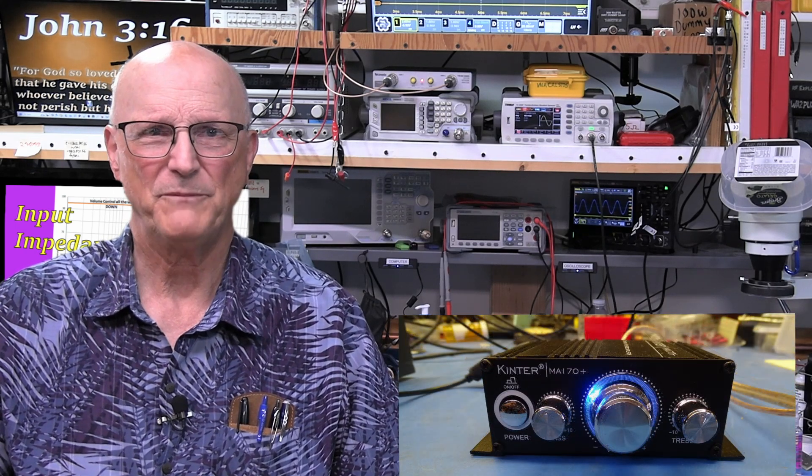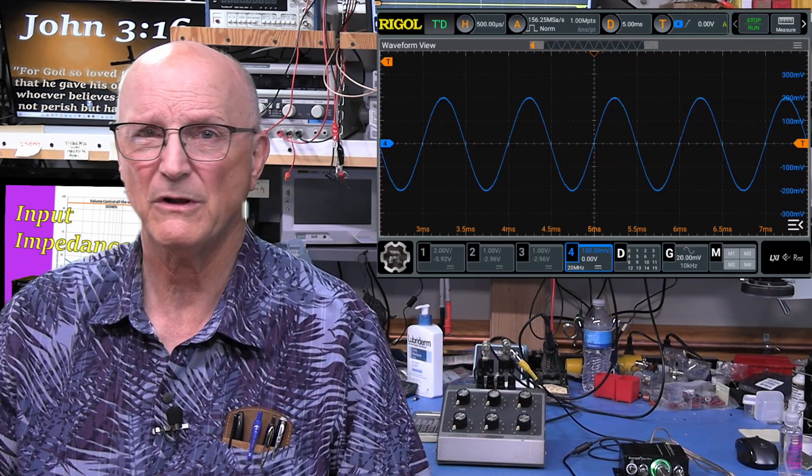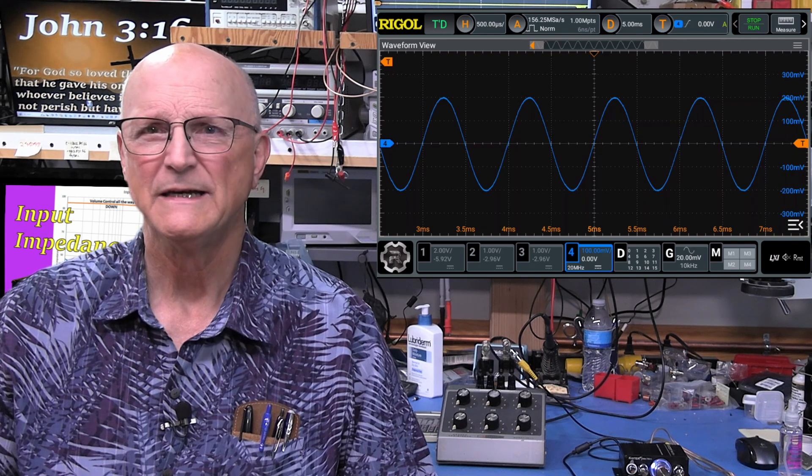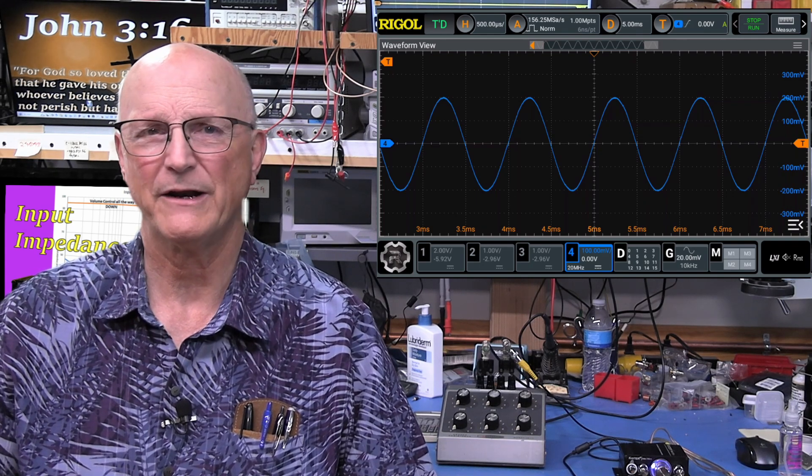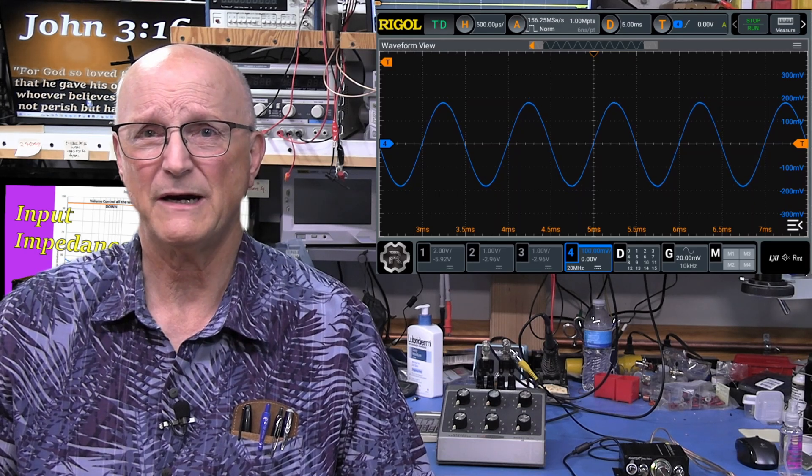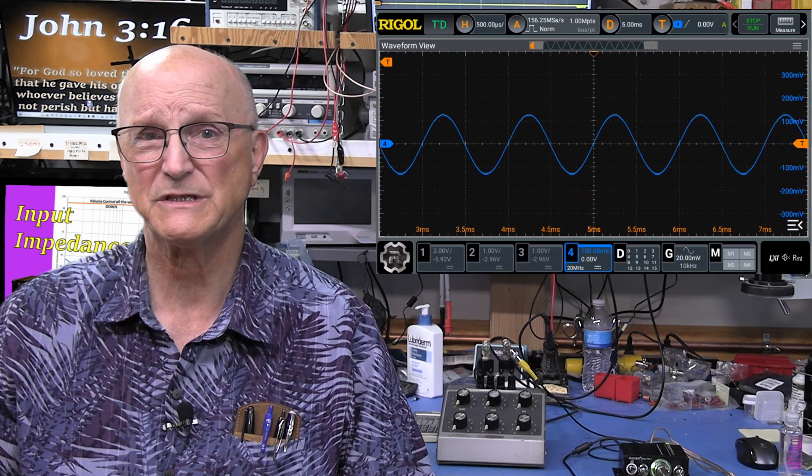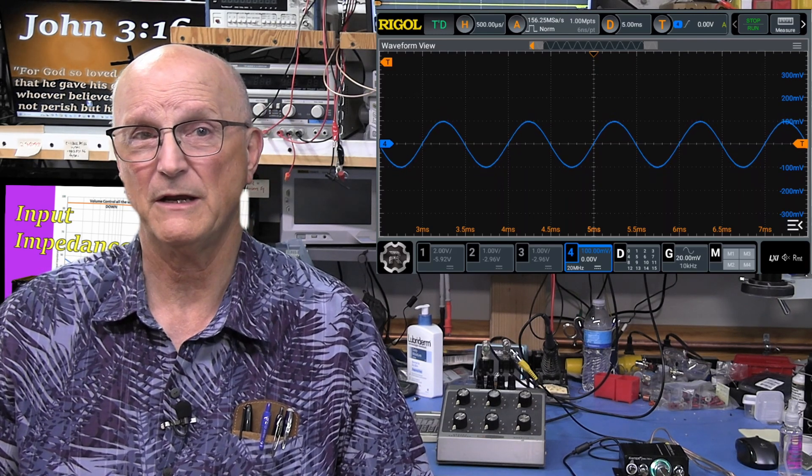Let's power up the amplifier. I set my scope so that I have the 400 mV peak-to-peak signal nicely aligned to my gradicles. I increase the resistance of my decade box until the signal in the scope reaches half of the original signal or 200 mV peak-to-peak.